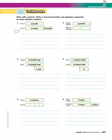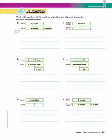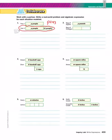In number one, it shows year one with P people, year two with P people and then 43 on the end. Let's start by writing the expression. Looking at the bar for year two, we somehow had P people plus 43 more people. So let's think of a situation for this one.